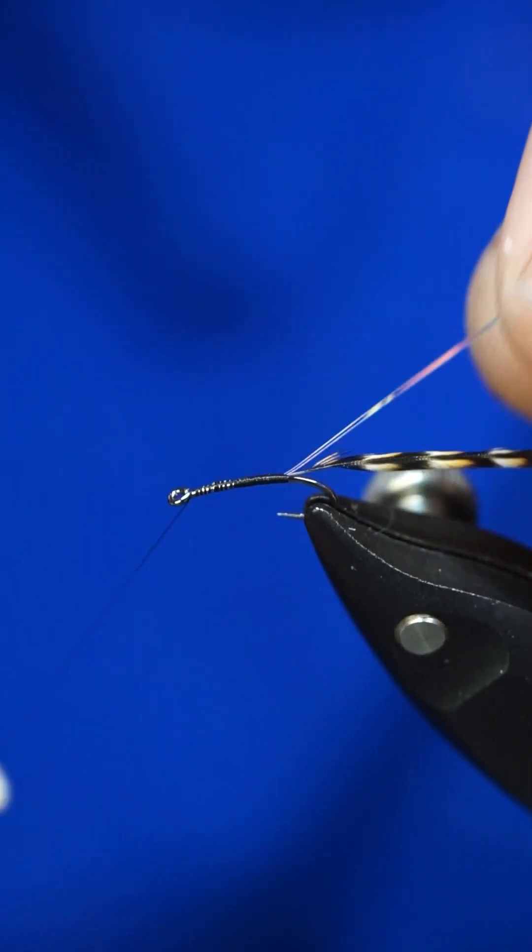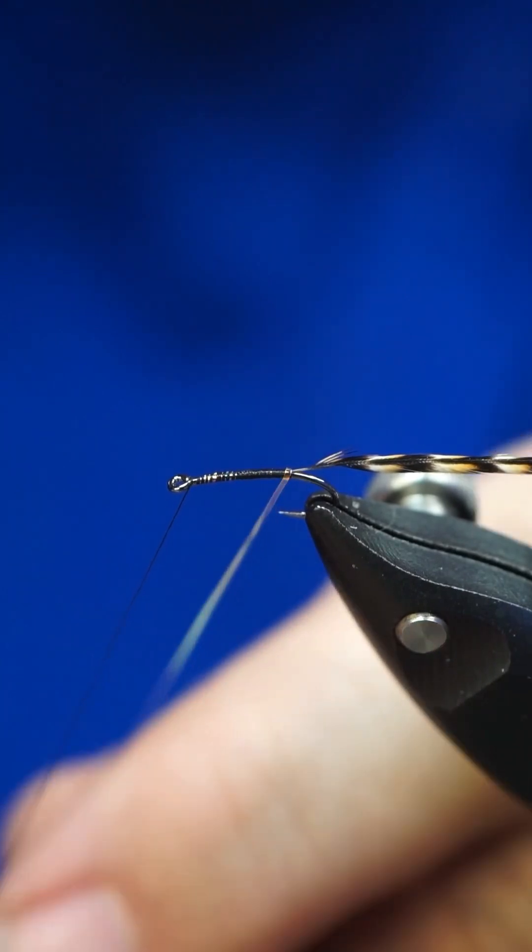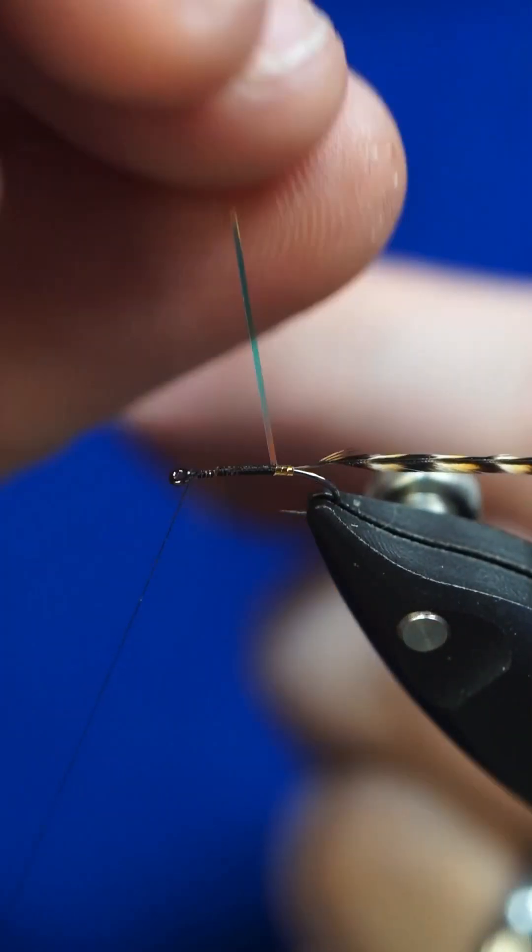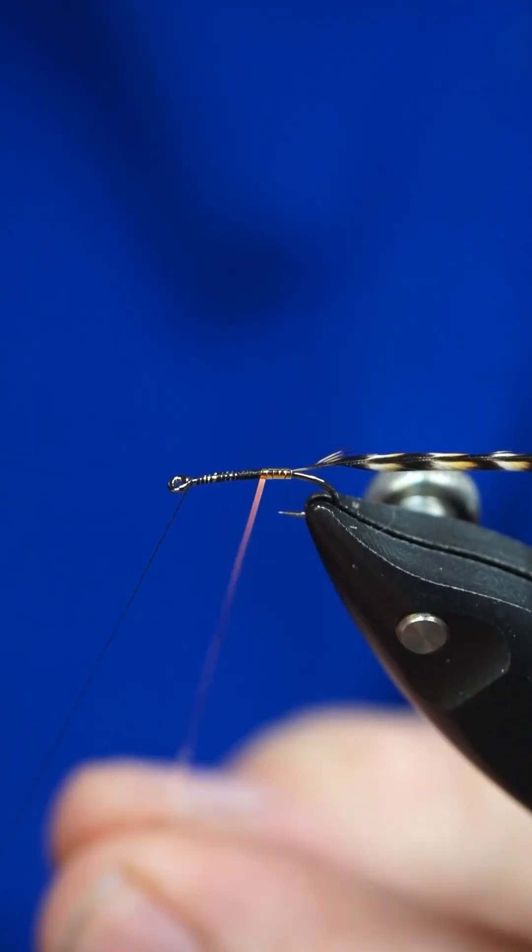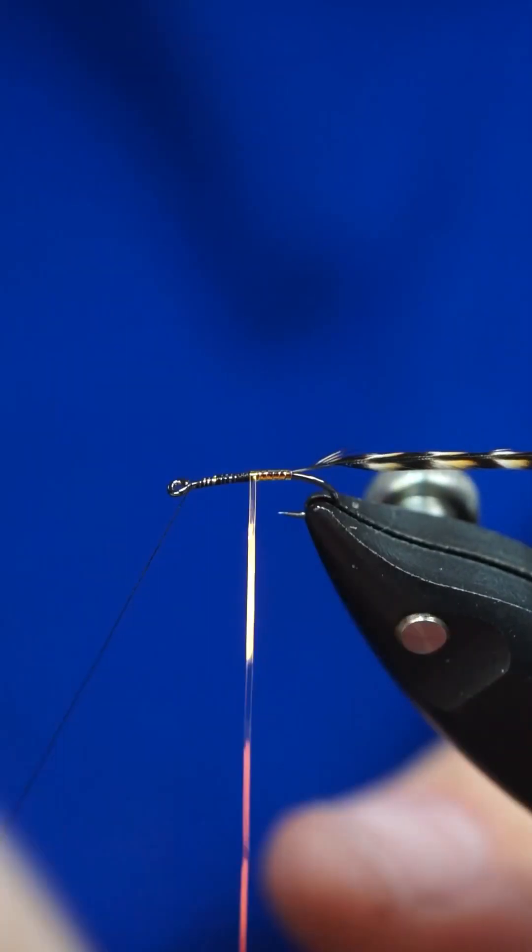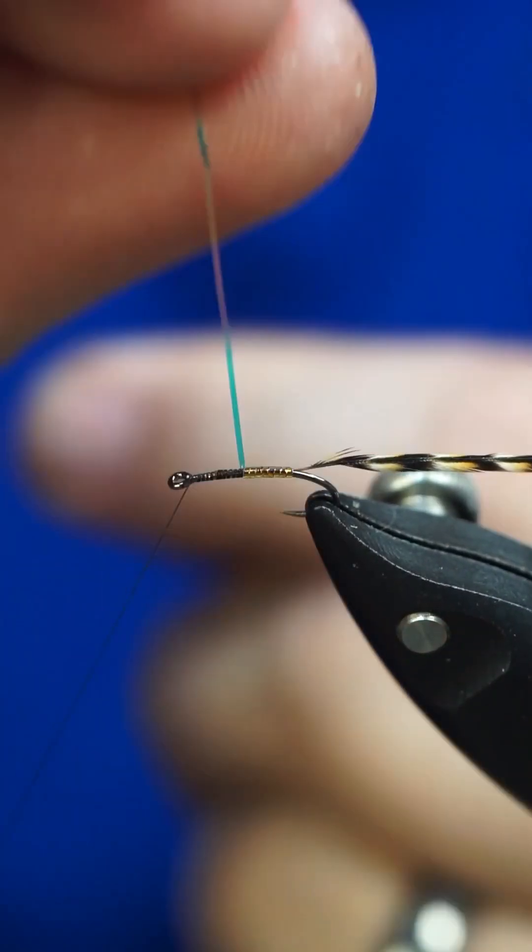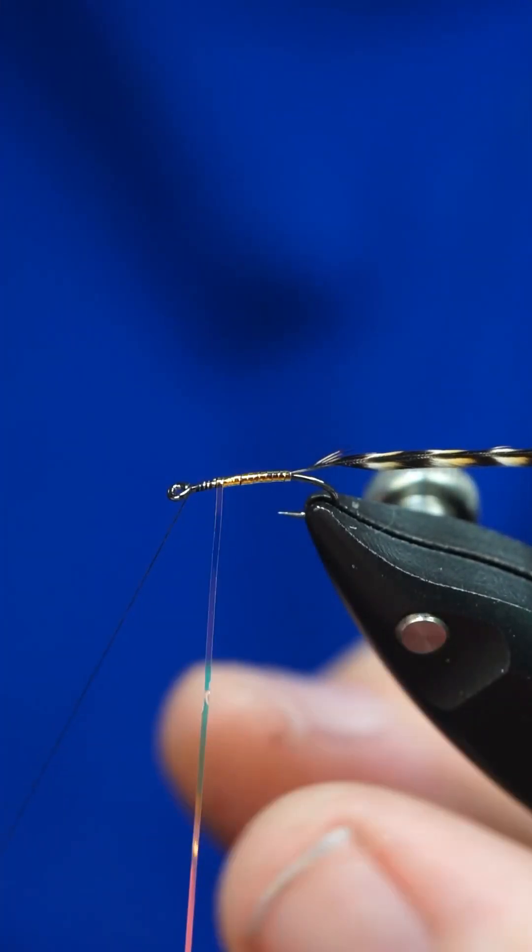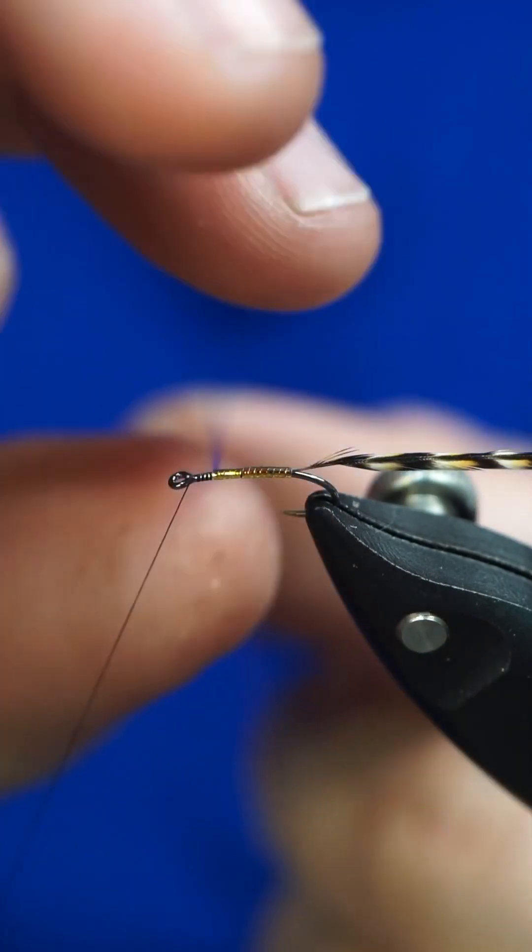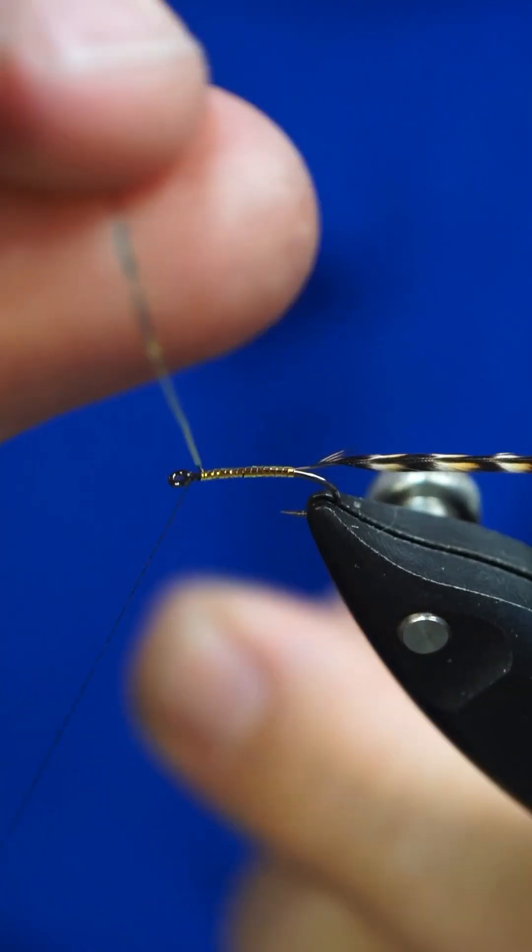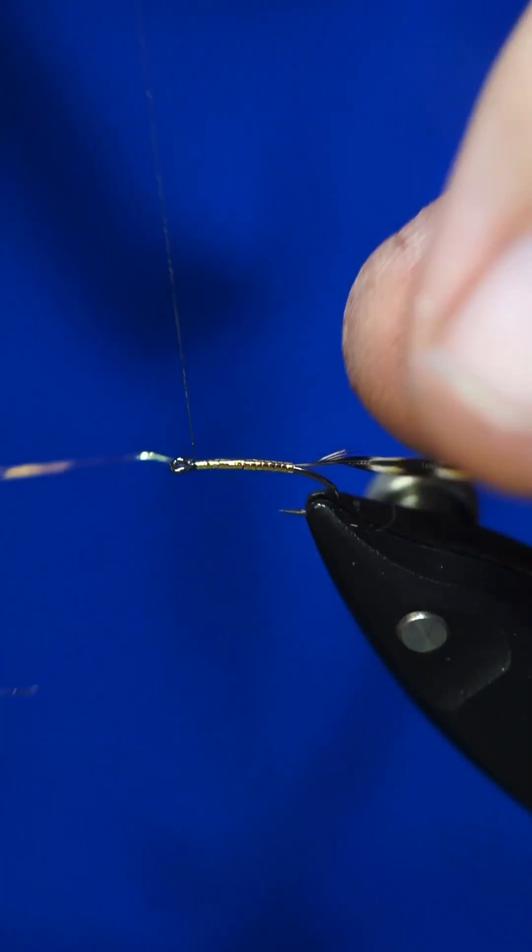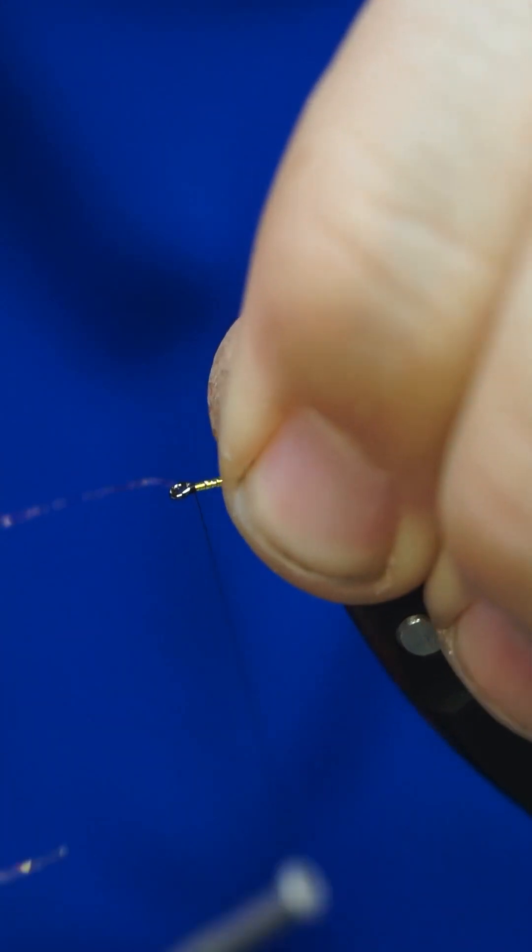All right, get that secured there and we're just gonna bring this up. Now this is like a Griffiths Gnat. Griffiths Gnat uses Peacock to add a little bit of flash in there, but obviously for this we use actual flash to add the flash. And this just represents or looks like some midges on the water.